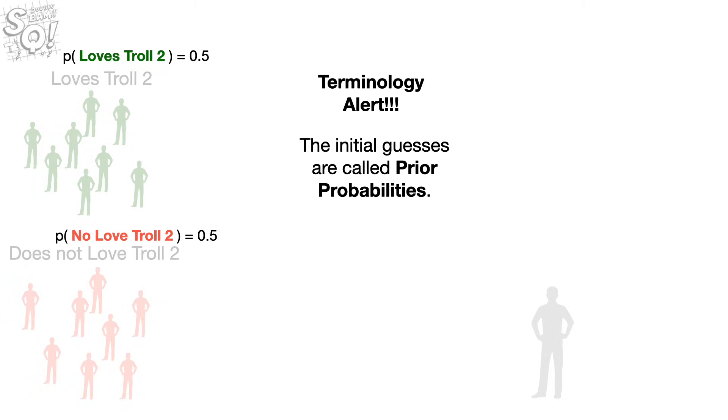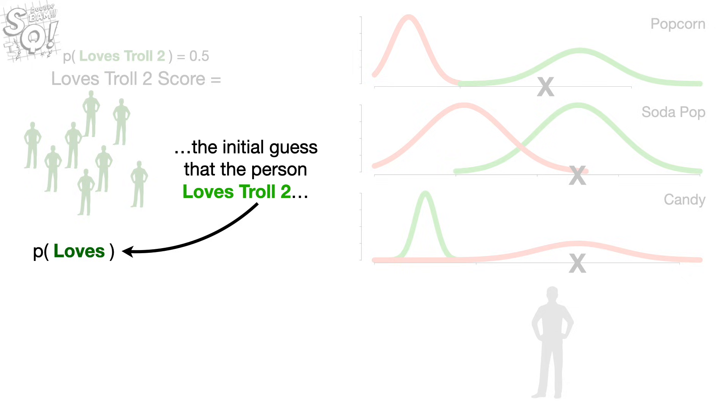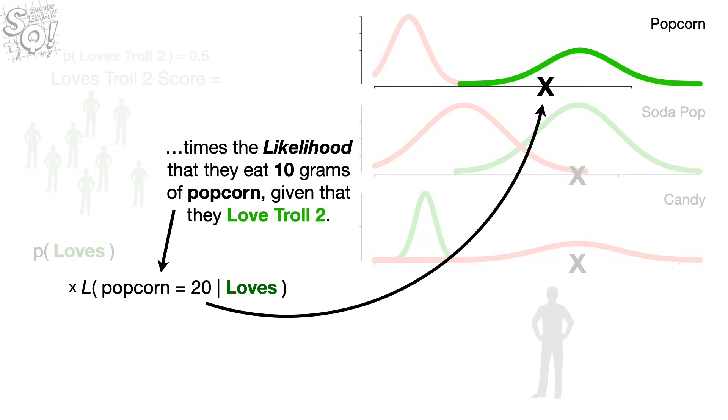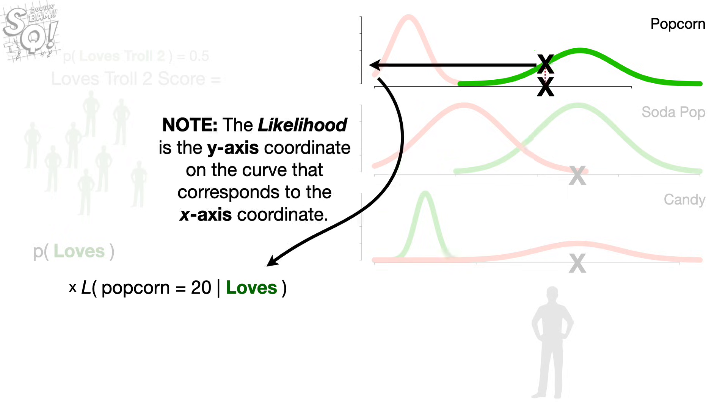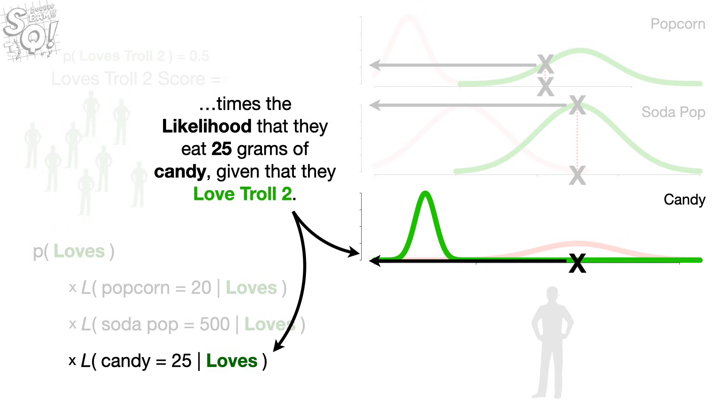Oh no, it's the dreaded terminology alert. The initial guesses are called prior probabilities. Now, the score for loves Troll 2 is the initial guess that the person loves Troll 2 times the likelihood that they eat 20 grams of popcorn given that they love Troll 2. Note, the likelihood is the y-axis coordinate on the curve that corresponds to the x-axis coordinate. And we multiply that by the likelihood that they drink 500 milliliters of Soda Pop given that they love Troll 2 times the likelihood that they eat 25 grams of candy given that they love Troll 2.